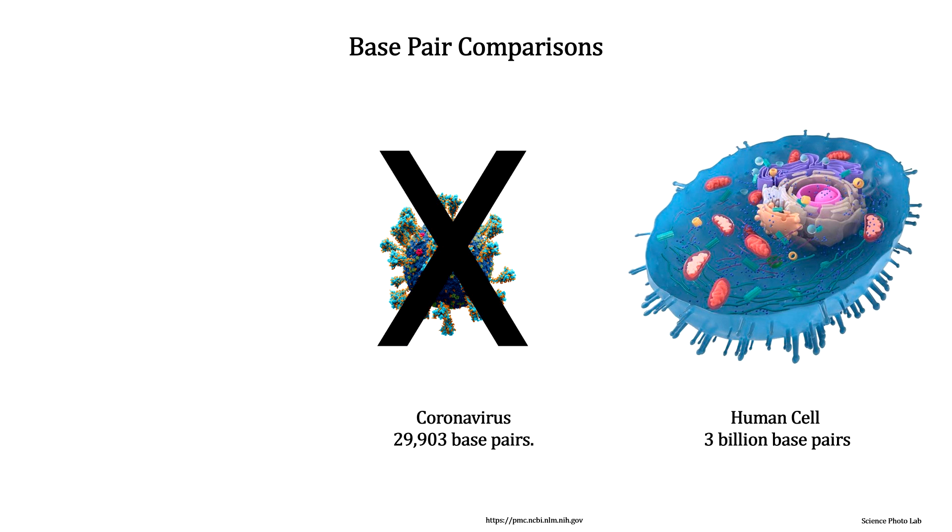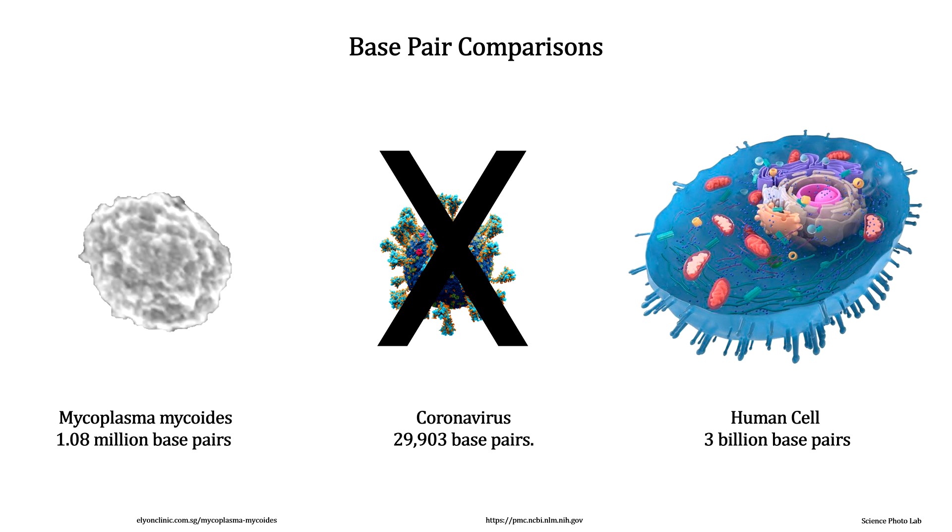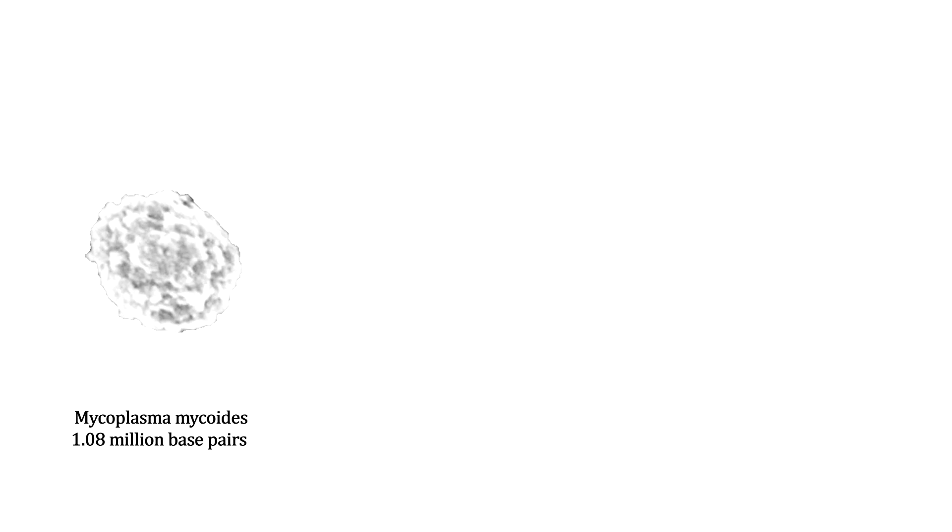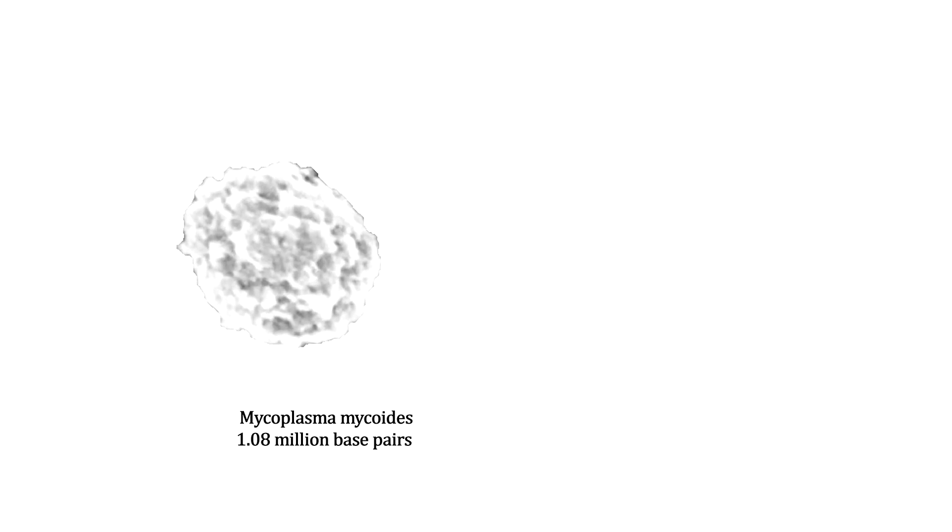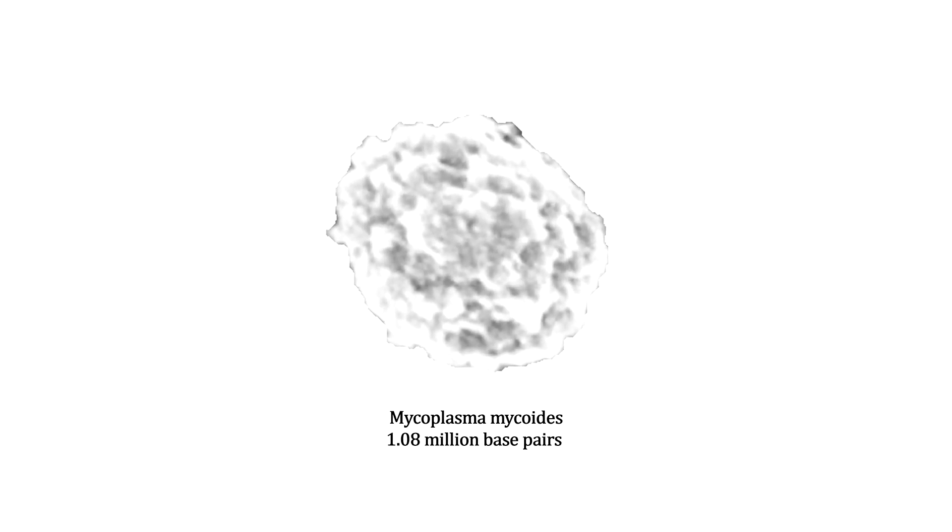So the first life could not have been a virus. The simplest single-celled organisms are bacteria. Here's mycoplasma mycoides. It has 1.08 million base pairs and contains 901 genes.